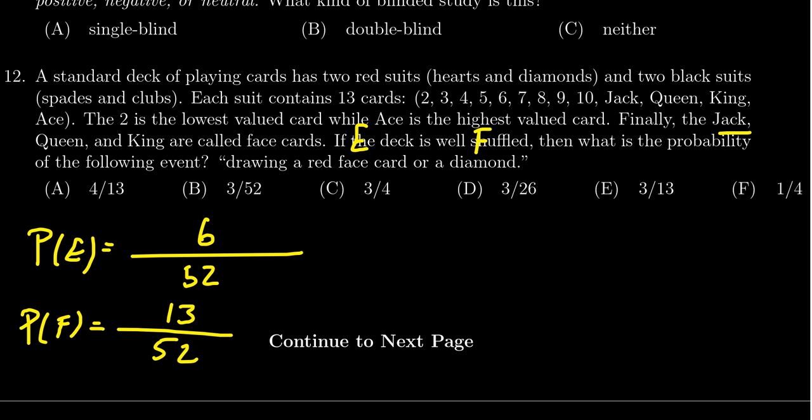Now what we're looking for is the probability of or here. So we're looking for the probability of E or F happening. By the principle of inclusion-exclusion, we take the probability of E plus the probability of F, and then we have to subtract the probability of E and F happening, their intersection there.